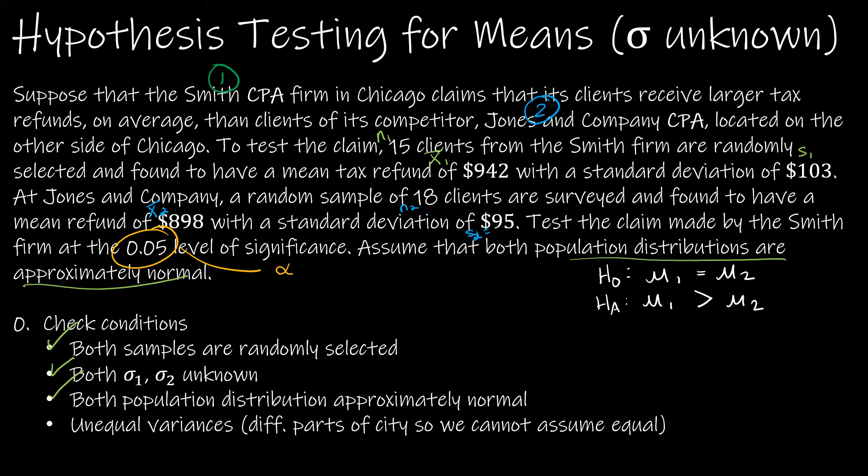And unequal variances. And again, this is the tricky part, but they are in different parts of the city and therefore we don't have reason to believe that they are equal. So conditions are met and we can move forward.